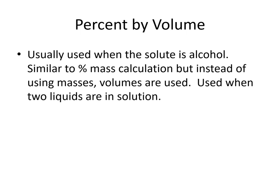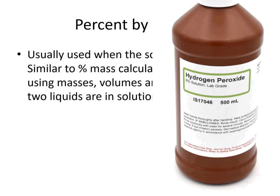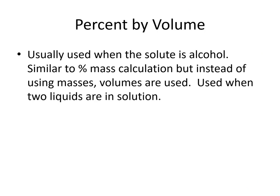We usually use this when our solute is alcohol, but it can really be used anytime you have two liquids in solution. If you've bought a bottle of hydrogen peroxide, for example, most hydrogen peroxide that you get from your drugstore is three percent hydrogen peroxide — which means it's three percent by volume, because hydrogen peroxide itself is a liquid. The other ninety-seven percent has to be something — and that's water.